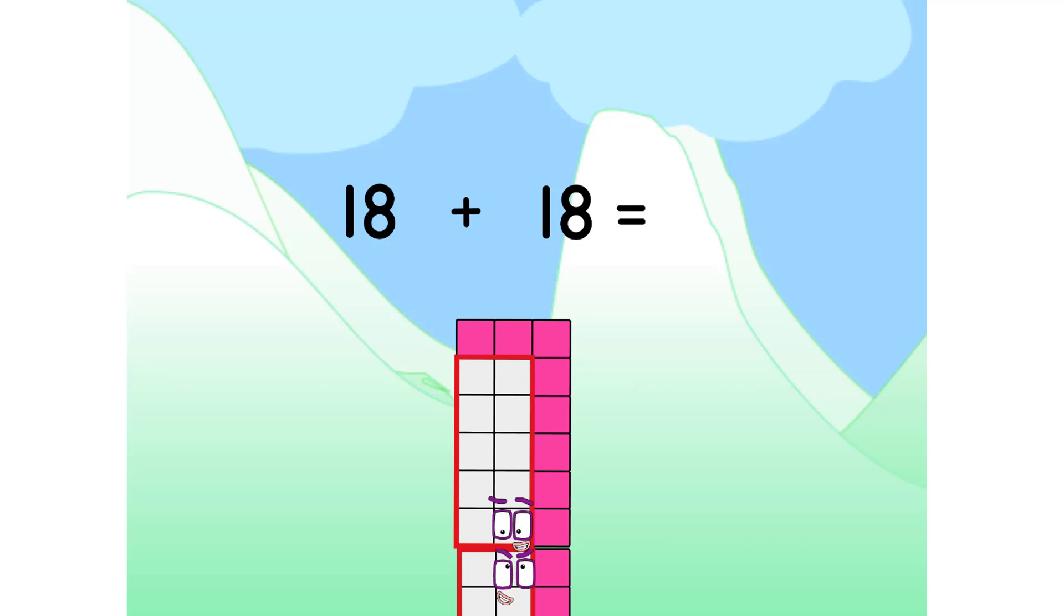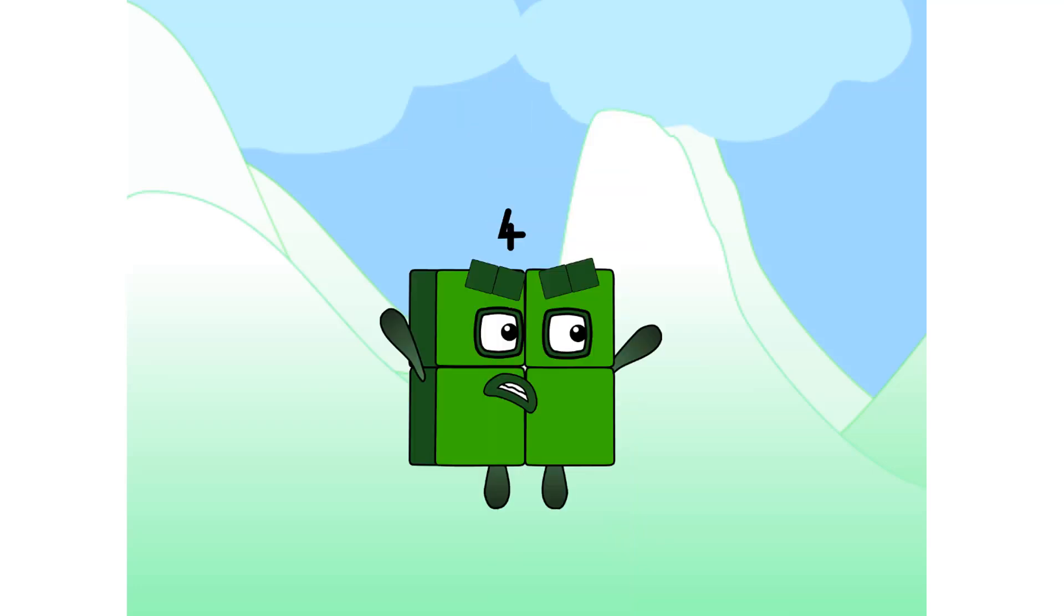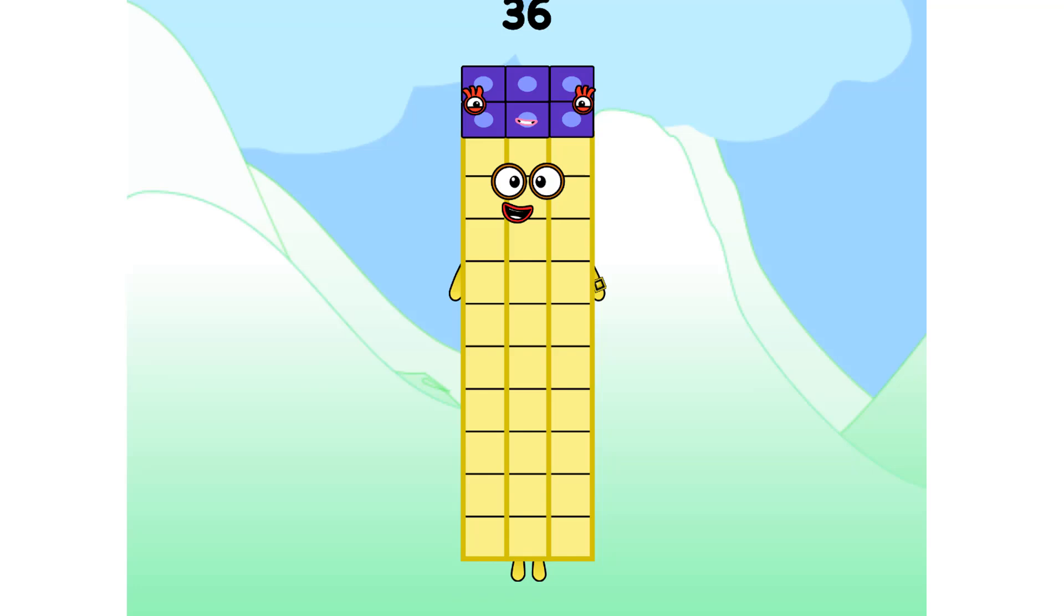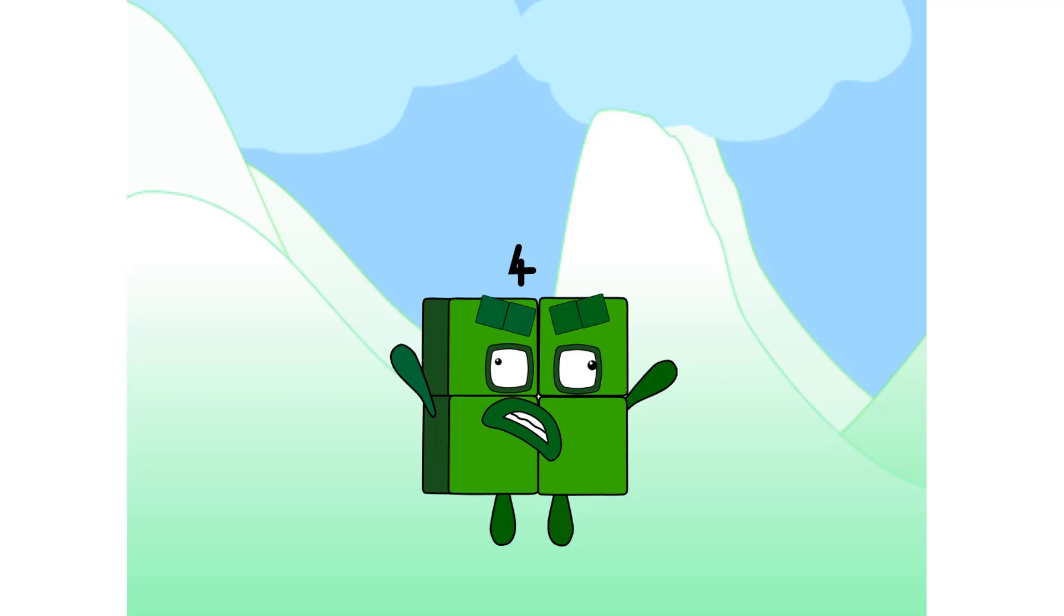18 plus 18 equals 36. Compound numbers. Why did it have to be compound numbers? I thought it was the best. If I am doing this. Oh, this is going to cycle time.